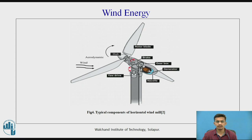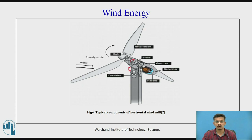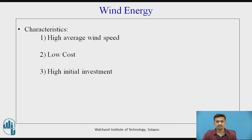This diagram shows the typical components of a horizontal axis wind turbine. When air pressure applied on the blades causes them to rotate, the rotary motion of the shaft is transferred to the gearbox and generator, which produce electricity. Key characteristics of wind energy include: high average wind speed is required, with defined cut-on speed (the minimum speed to rotate the blades) and cut-off speed (the highest speed at which wind causes electricity cut-off). Wind energy is low cost but requires high initial investment.